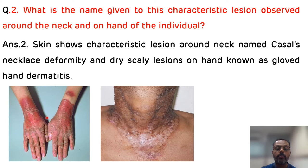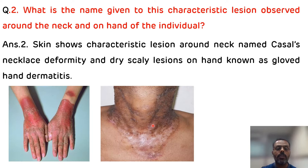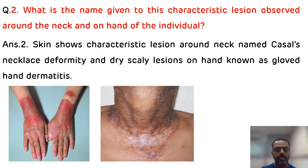These lesions affect mostly the sun-exposed parts and are photosensitive. The lesion on the dorsum of the hand is known as glove hand dermatitis, and the lesion around the neck is known as Casal's necklace.